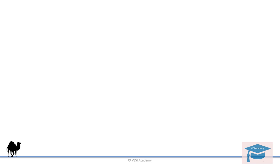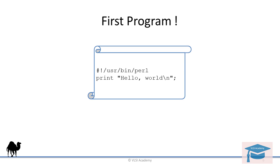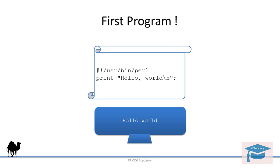Let's have a look at the basic first program. Here is our first program. The line 'usr/bin/perl' is actually the Perl interpreter binary path — it is called the shebang line. If you want the script to be portable from Windows to Unix and Cygwin-related platforms, then keep the shebang line. It is generally good practice to keep this line, and the output will obviously be 'Hello World'.